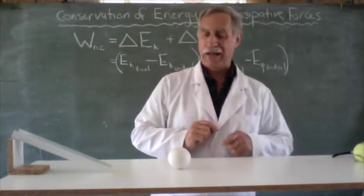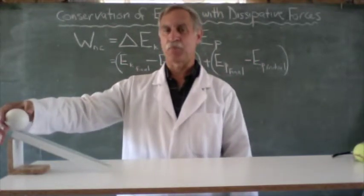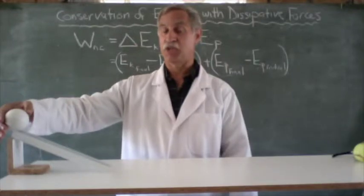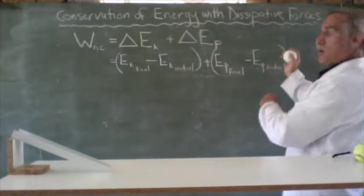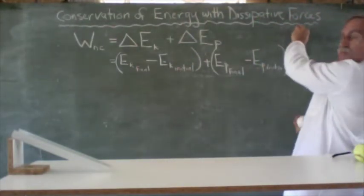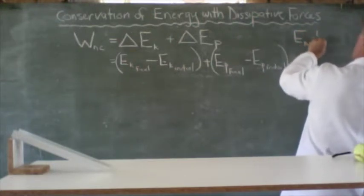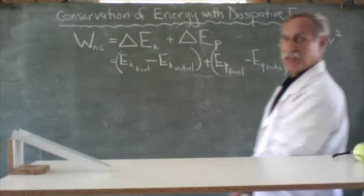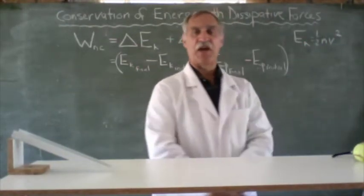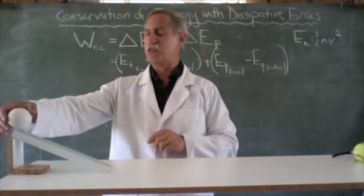So let's start with what was its initial kinetic energy? Well if it's going at zero meters per second, and we know that EK is equal to a half MV squared, half mass times velocity squared. But if we have a velocity of zero,